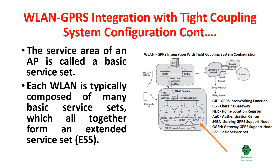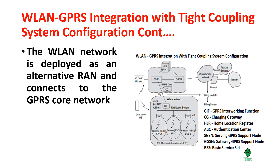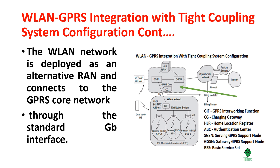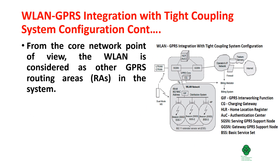Each WLAN is typically composed of many Basic Service Sets which altogether form an Extended Service Set, that is ESS. The WLAN network is deployed as an alternative RAN and connects to the GPRS core network. Here is a representation of the GPRS core network. From the core network point of view, the WLAN is considered as another GPRS routing area in the system.